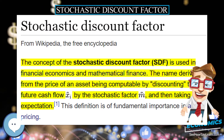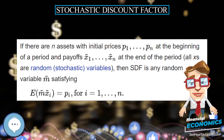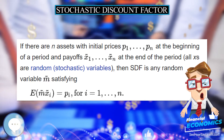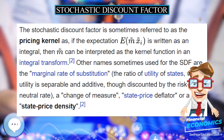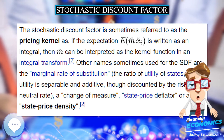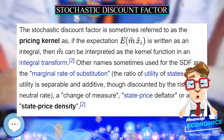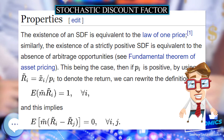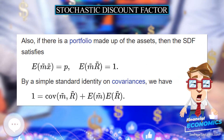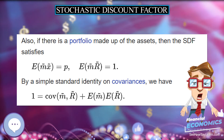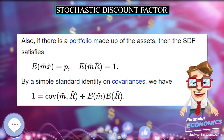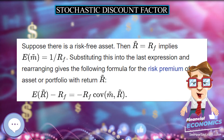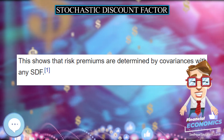If there are N assets with initial prices P_1 through P_N at the beginning of a period, and payoffs X_1 through X_N at the end of the period, where all X's are random variables, then the SDF is any random variable M satisfying the pricing equation.